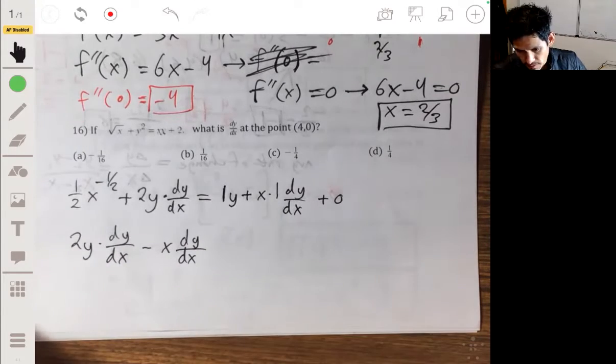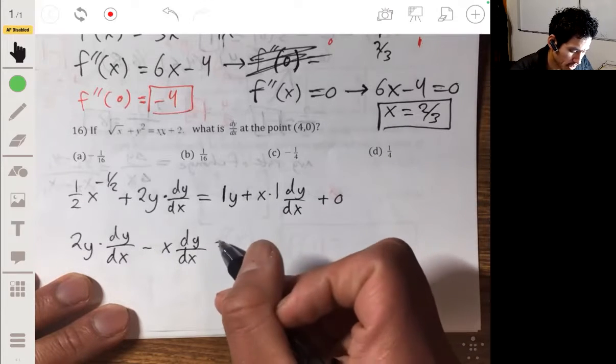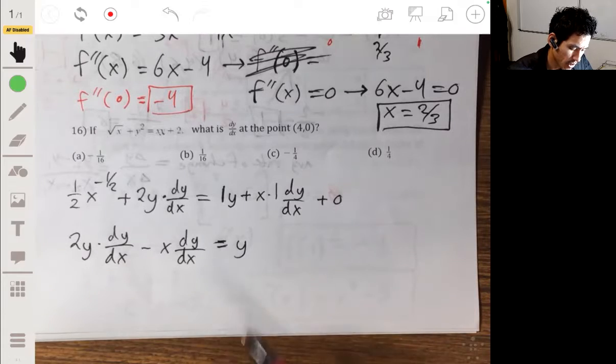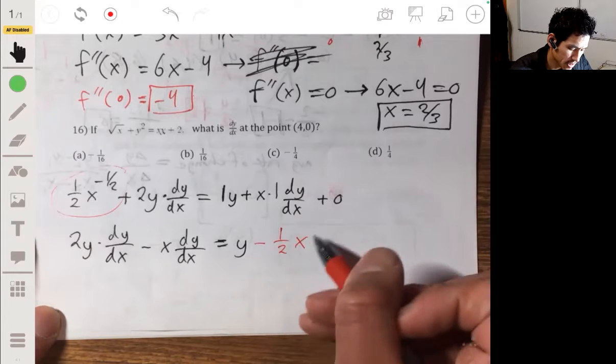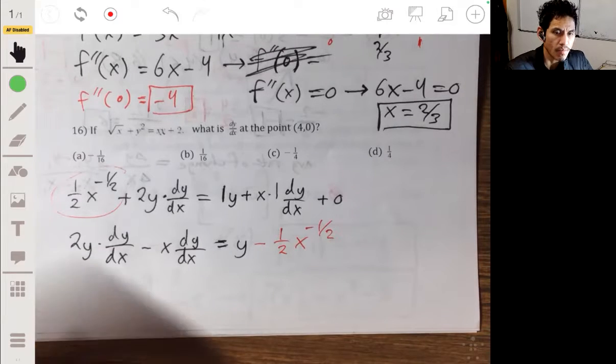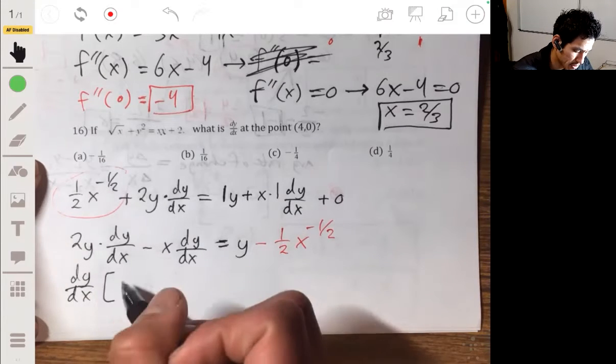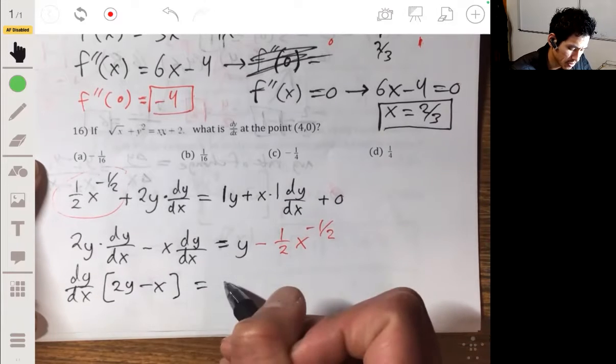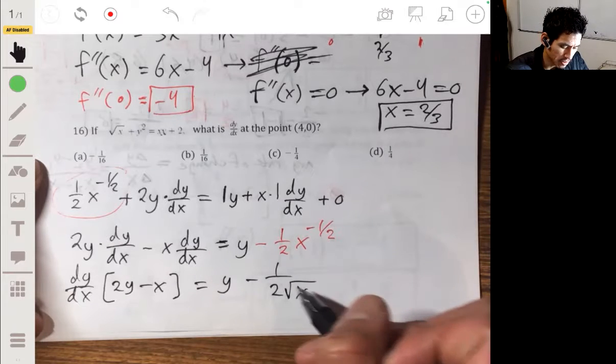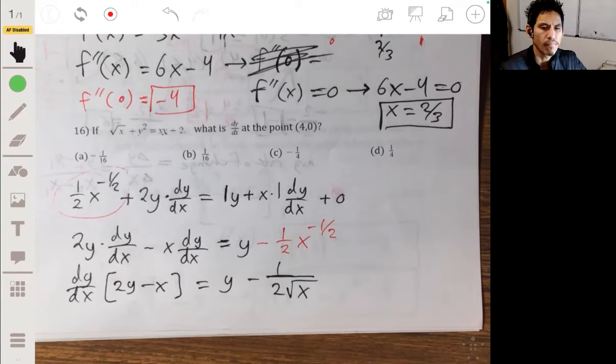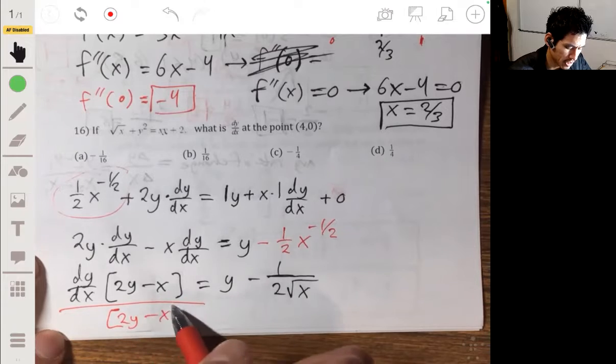And then I'm going to keep the y and the x on the right side, so we have equal to y. And then I'm going to subtract this whole thing. So then on the right side, I'm going to have minus one-half x to the negative one-half. And then here I just factor out the dy/dx, dy/dx times (2y minus x) equals y minus one-half, and x to the negative one-half is the same as the square root of x in the denominator. And now I just divide by this thing, divide both sides by 2y minus x.